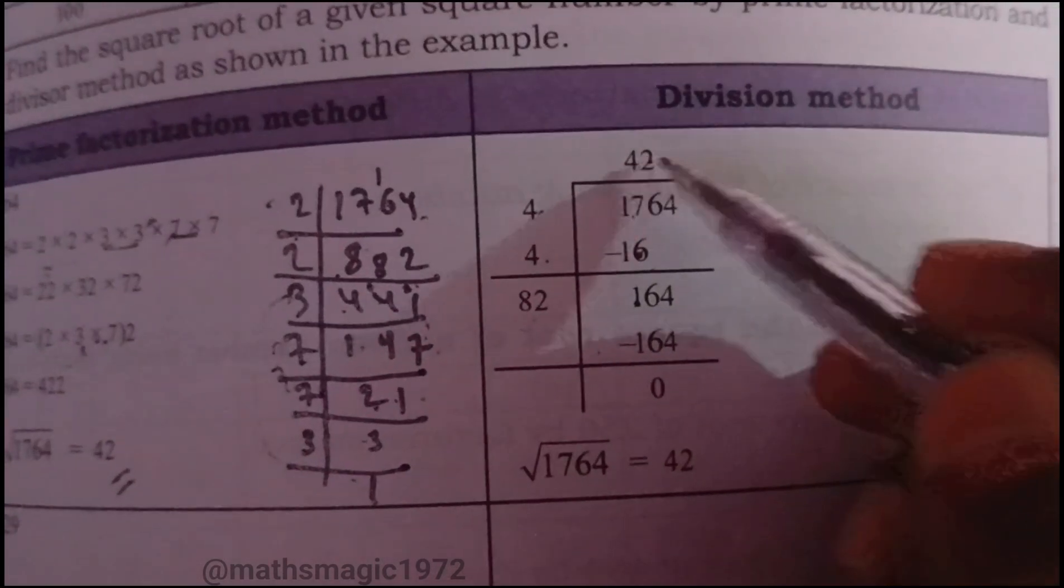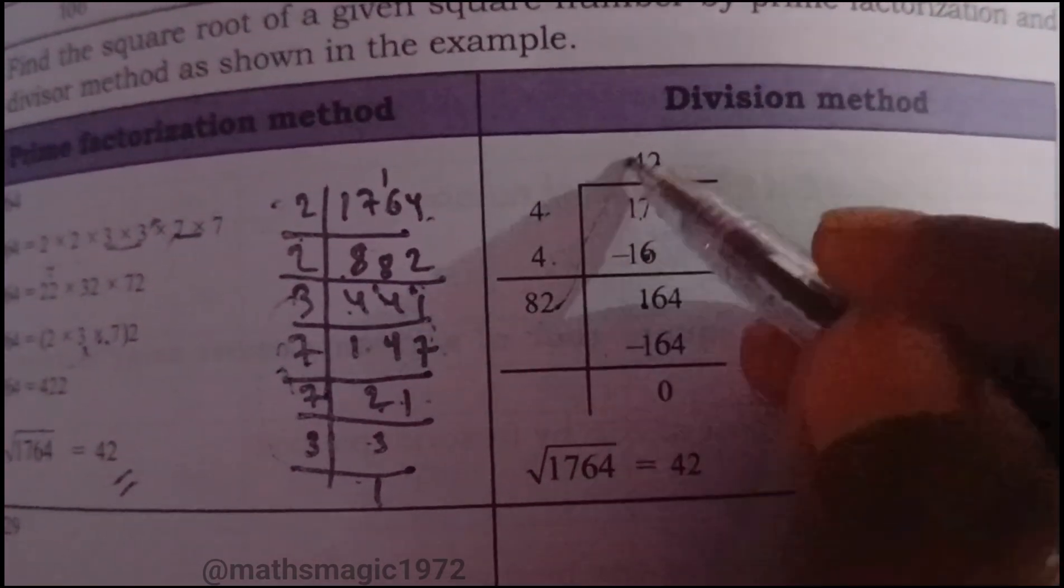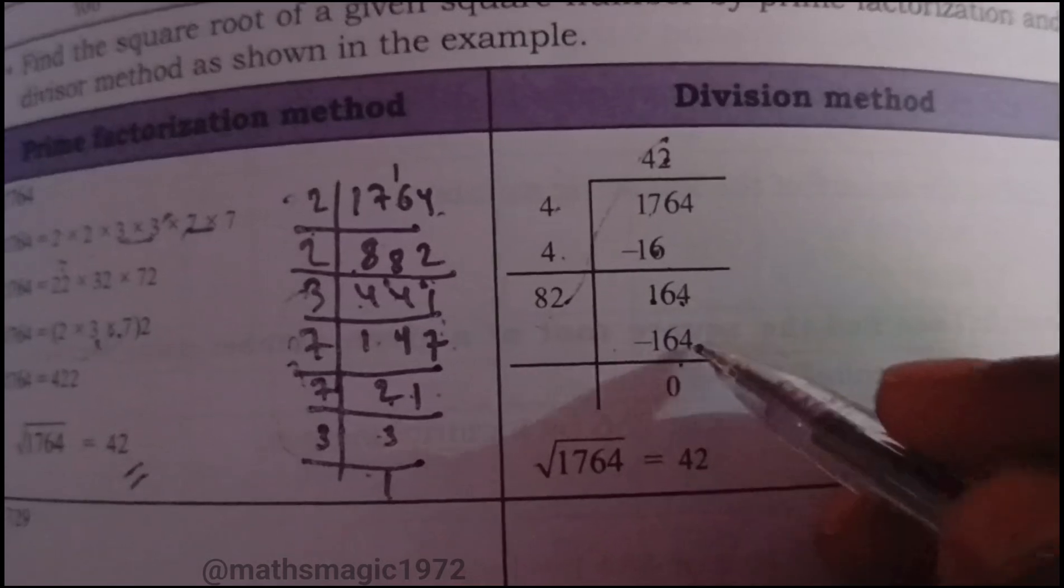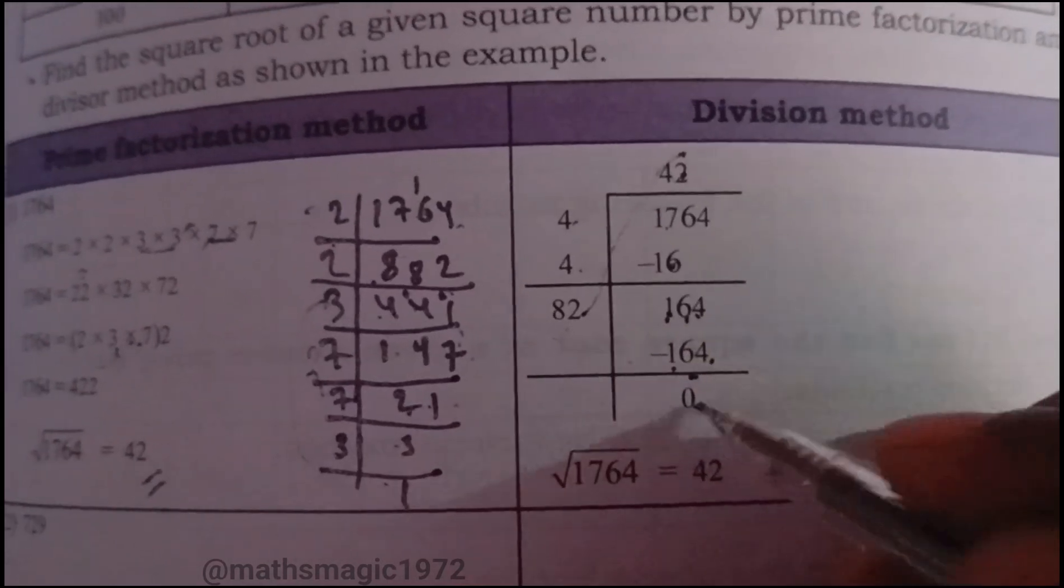Double 4 is 8. 82 times 2 equals 164. 164 minus 164 equals 0.